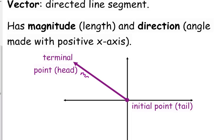We've got our magnitude represented by the length, and then the direction is our angle, made with the positive x-axis — standard measurement, just like we've been doing so far. A key to vectors is knowing their components — they're the pieces that make up the vector: the horizontal component and the vertical component. We'll break that down on the next slide.